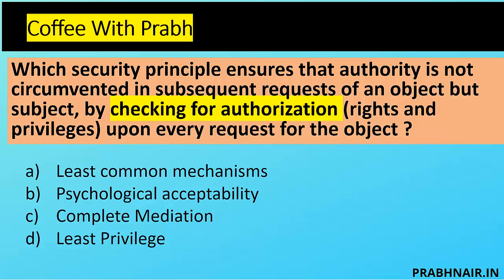Next coffee shot. A security principle ensures that authority is not circumvented in subsequent requests of an object by a subject, by checking for authorization rights and privileges upon every request for the object. The question is about ensuring that whenever any subject requests an object, it must go through a proper authorization process — without authorization they cannot access it. Least common mechanism is removed; psychological acceptability is the opposite. Least privilege also makes some sense, but the most effective answer is complete mediation.